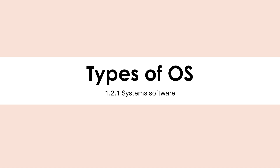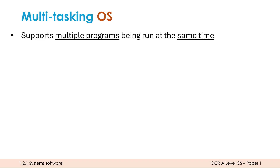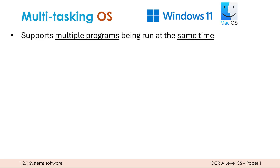There are five types of OS to cover. The first is the multitasking OS, which covers most normal computers. This OS supports multiple programs being run at the same time. Think of things like Windows or Mac OS — you're able to have many programs open and running at the same time. You might be using Google Chrome while listening to Spotify at the same time.